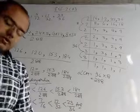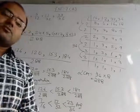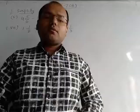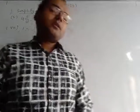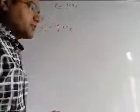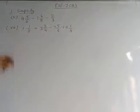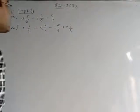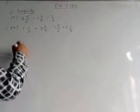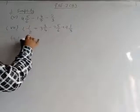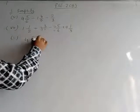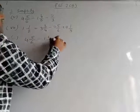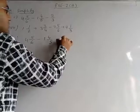So like this you have to do question number 6 also. Now we will start new exercise — exercise 2B, question number 5. Question number 5, part number 5 is: simplify 4 and 5/6 minus 1 and 4/5 minus 2/3.